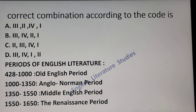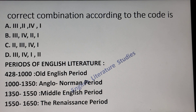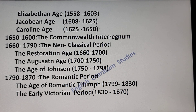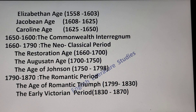The periods of English literature are as follows: 428 to 1000 — Old English period; 1000 to 1350 — Anglo-Norman period; 1350 to 1550 — Middle English period; 1550 to 1650 — Renaissance period, which includes the Elizabethan age, Jacobean age, and Caroline age; 1650 to 1660 — the Commonwealth and Interregnum; 1660 to 1790 — the Neoclassical period, which includes the Restoration period, Augustan age, and the Age of Johnson.